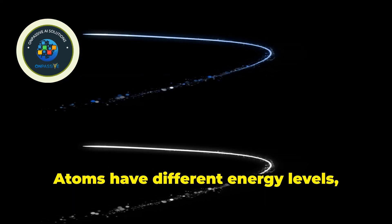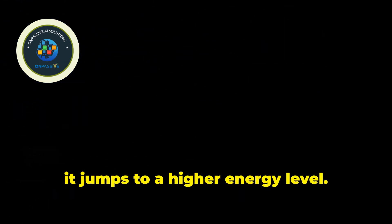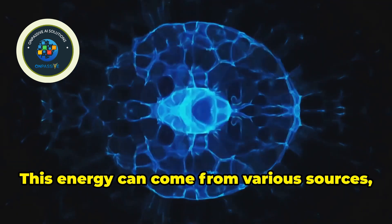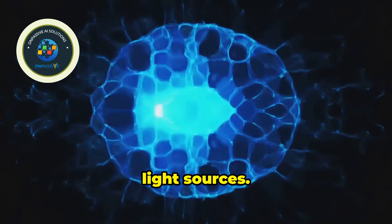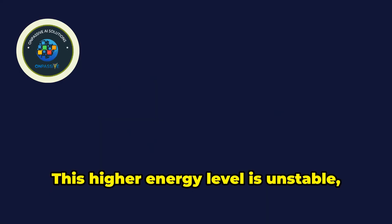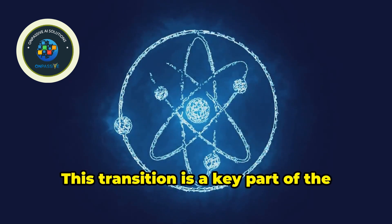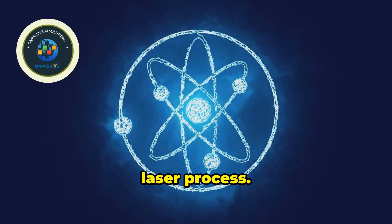Atoms have different energy levels, and when an atom absorbs energy, it jumps to a higher energy level. This energy can come from various sources, such as electrical currents or other light sources. This higher energy level is unstable, so the atom wants to return to its original lower energy level. This transition is a key part of the laser process.